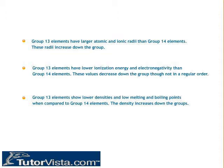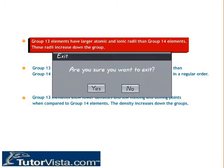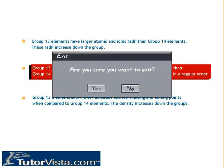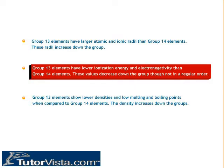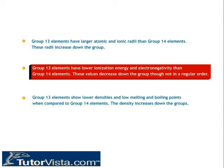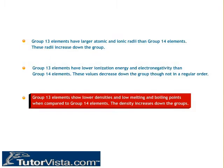Group 13 elements have larger atomic and ionic radii than group 14 elements, and these radii increase down the group. Group 13 elements have lower ionization energy and electronegativity than group 14 elements; these values decrease down the group, though not in a regular order. Group 13 elements also show lower densities and lower melting and boiling points compared to group 14 elements, with density increasing down the group.